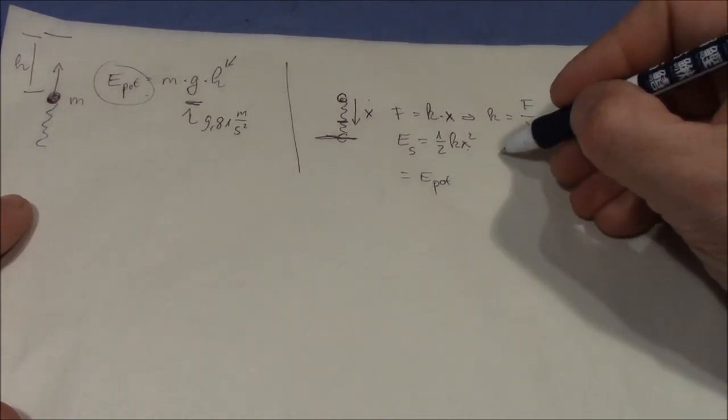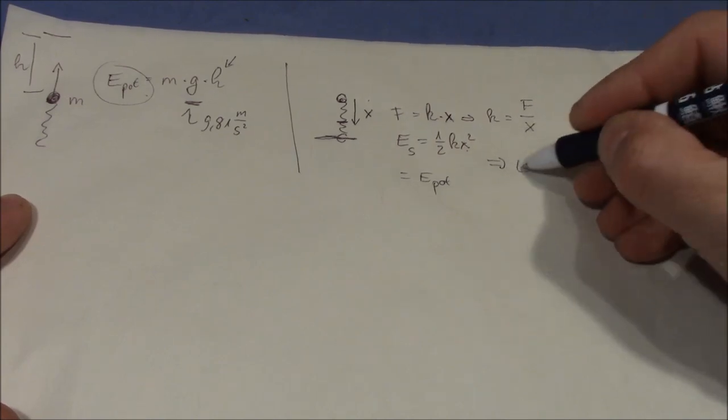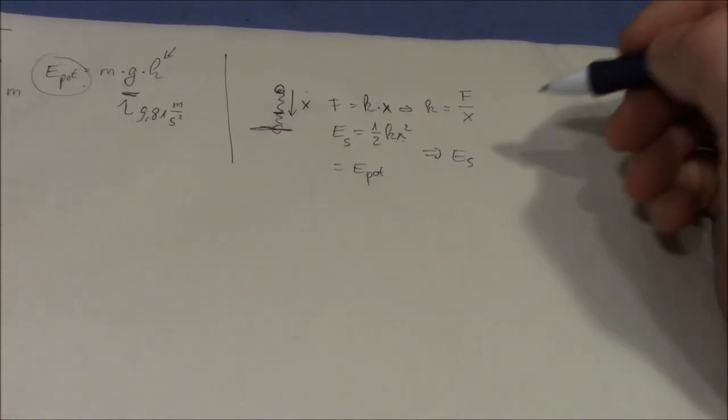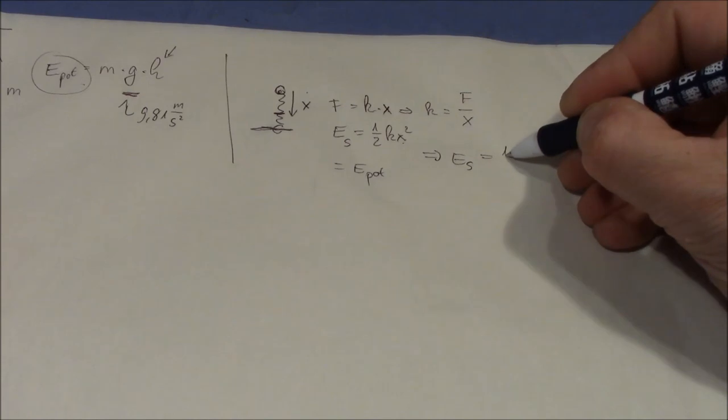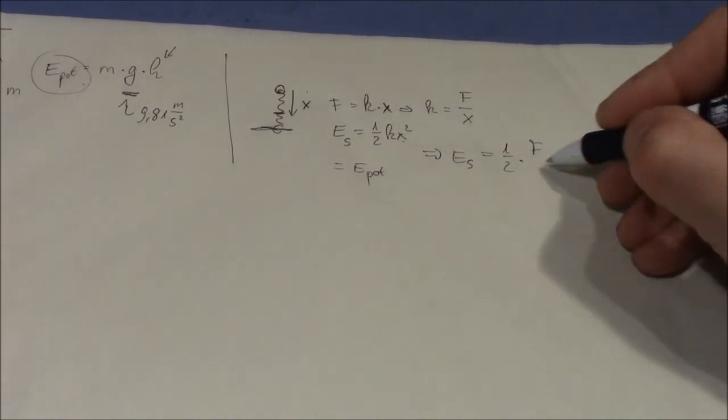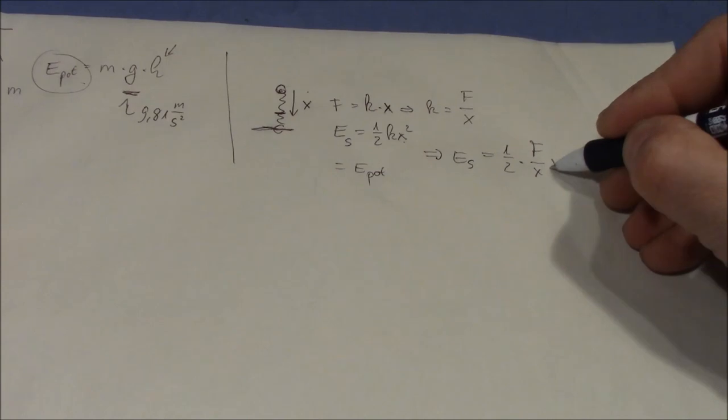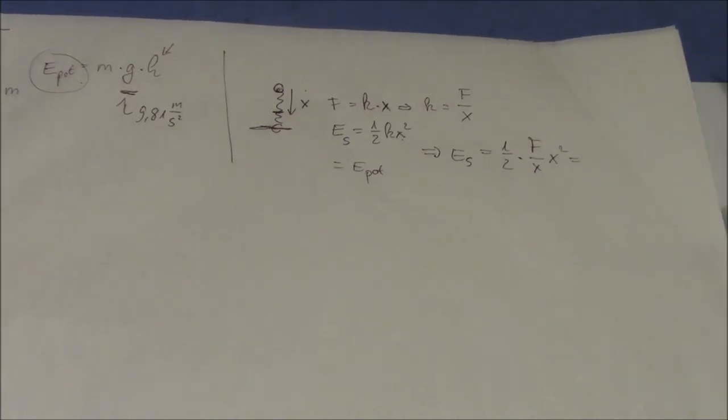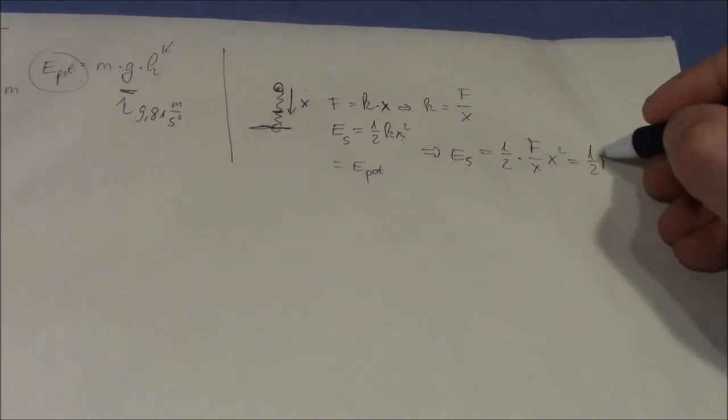k equals F divided by x. So we then can calculate the spring energy as one half times k, which is one half times F divided by x times x squared, which is one half F times x. That's all we need.